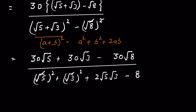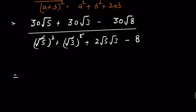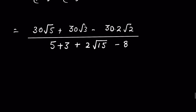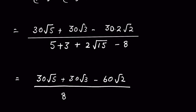We can remove the square root with the square, so the denominator simplifies. We have 30 times square root of 5 plus 30 times square root of 3 minus square root of 8, which we can write as 2 root 2. So it becomes 30 times 2 root 2 upon 5 plus square root of 15 minus 8, plus 30 times square root of 3 minus 60 times square root of 2 upon 2 times square root of 15 minus 8. The plus 8 and minus 8 cancel each other.